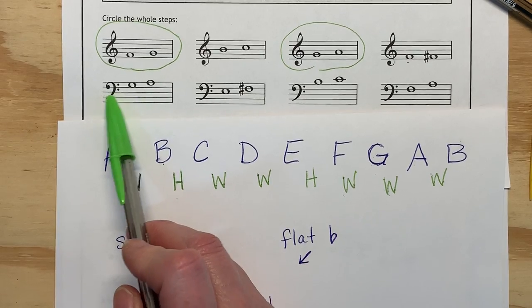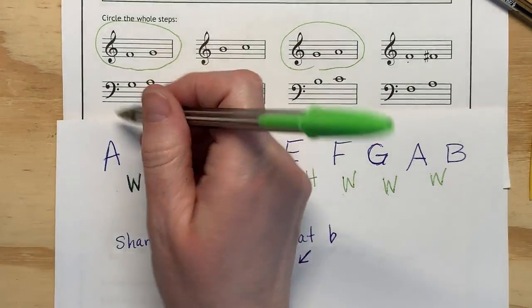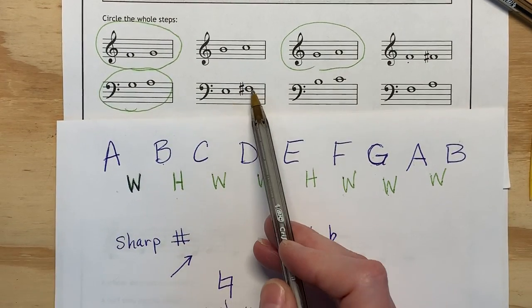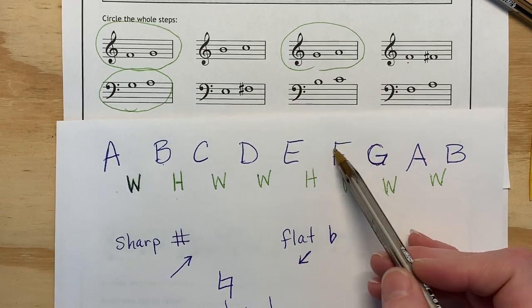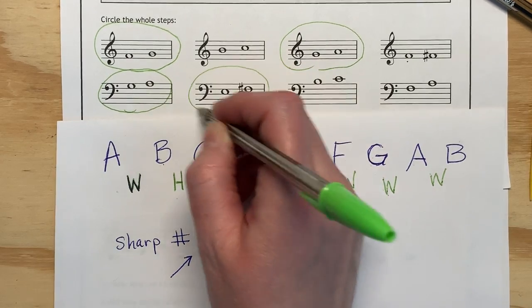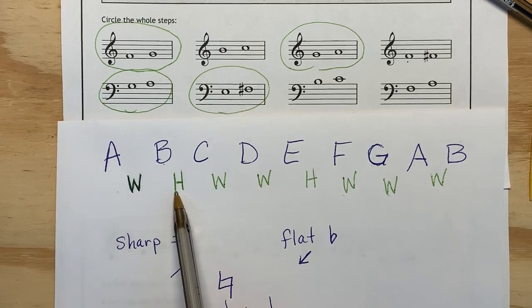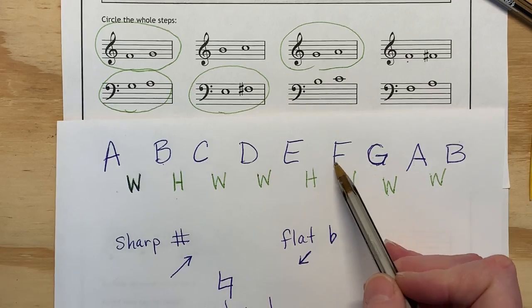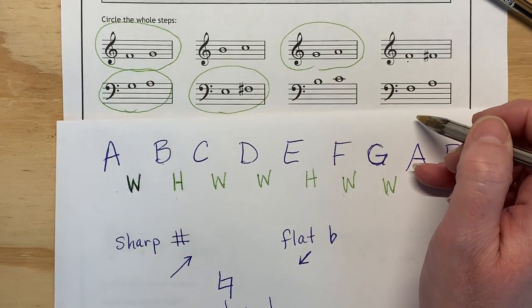Now we're down in the bass clef. G to an A, that's a whole step. So we can circle that one. E to an F sharp. E to an F is a half step, but if we go in between here and have that F sharp, then that is a whole step. B to a C, that's one of our half steps. F to A, that jumps right over G. So that's definitely not a whole step.